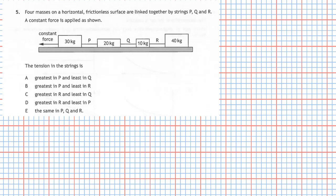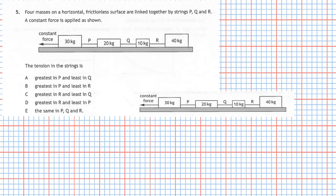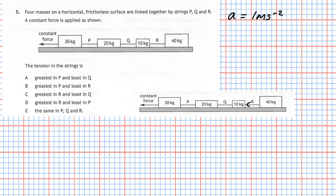Question five from section one of the 2019 Higher Physics examination. Four masses on a horizontal frictional surface are linked by strings P, Q, and R, with a constant force applied. We need to find where tension is greatest and least. The key point is that all boxes — the 30 kg, 20 kg, 10 kg, and 40 kg ones — have the same acceleration.